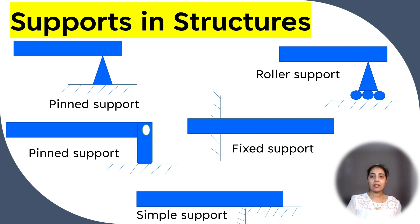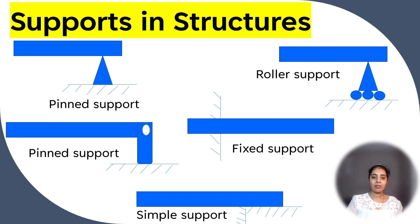All of these supports can be located anywhere along a structural element — at the midpoint or at any other intermediate points. The type of support connection determines the type of load that support can resist, and also has a great effect on the load-bearing capacity of each element and the overall system. This is a pin support, this is a roller support, this is a fixed or built-in support, and this is a simple support.